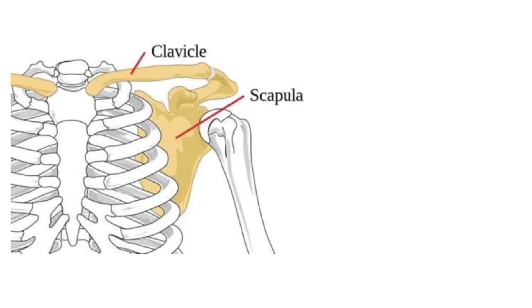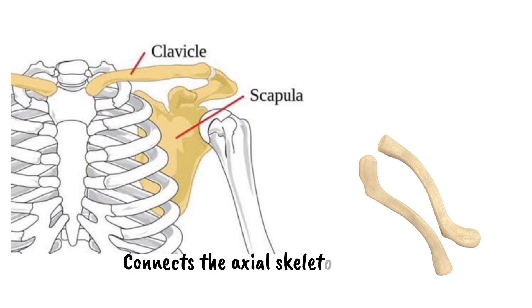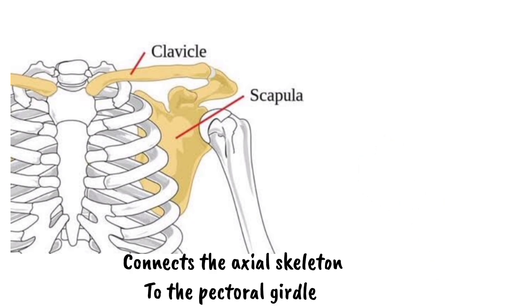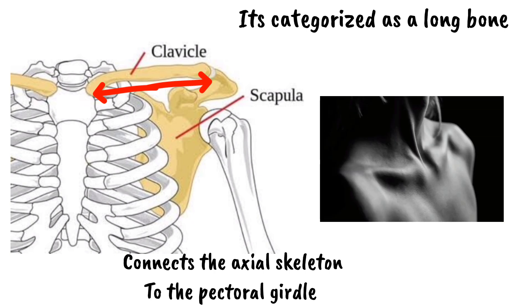The clavicle, also called the collar bone, is a slender S-shaped bone that connects the axial skeleton to the pectoral girdle. It extends between the manubrium of the sternum and the acromion of the scapula. The bone is categorized as a long bone and can be easily felt along its length under the skin.